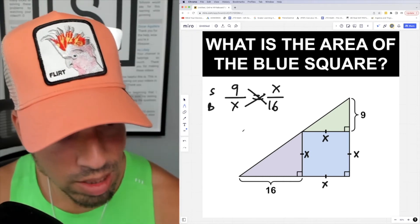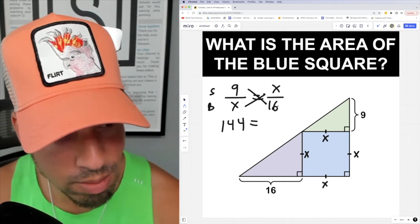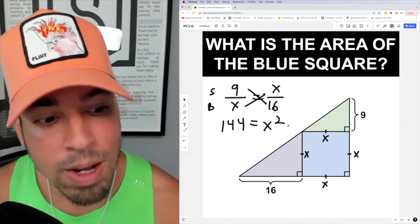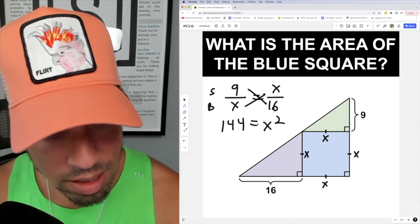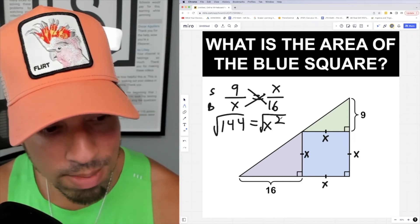So check it out: nine times 16 is 144, equals x times x, which is x squared. Now, if I want to find the actual value of x, I can take the square root of both sides and that'll give me the side length.